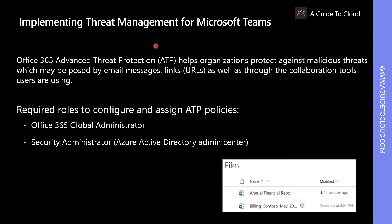Office 365 Advanced Threat Protection helps your organization protect against malicious threats, which may be posed by email messages, links, as well as through your collaboration tools. It includes threat protection policies, reports, threat investigation, and response capabilities as well.